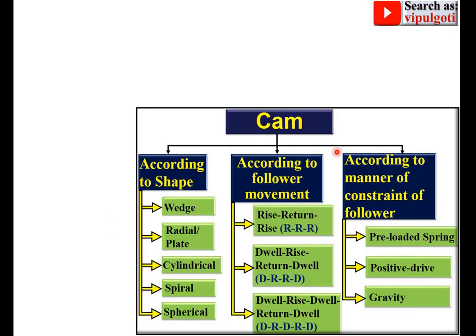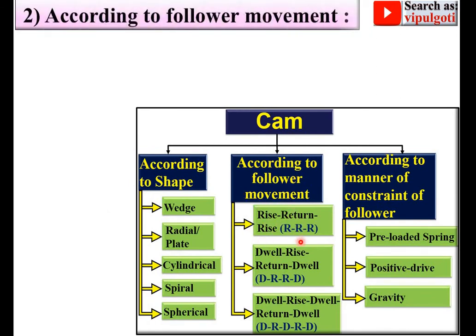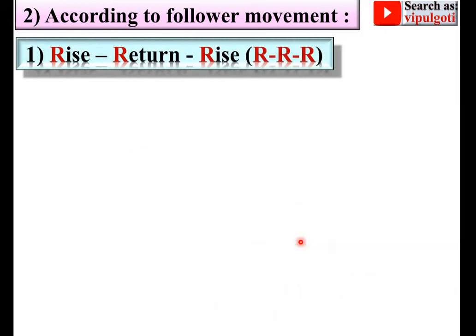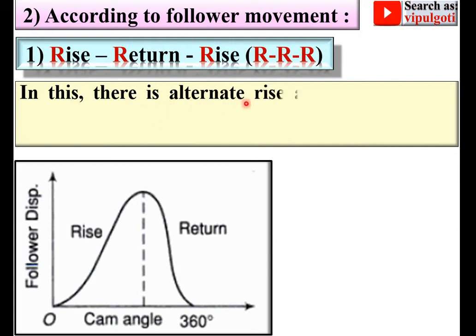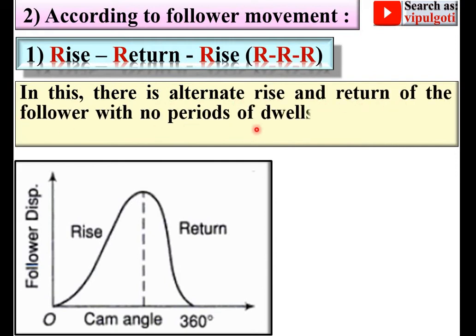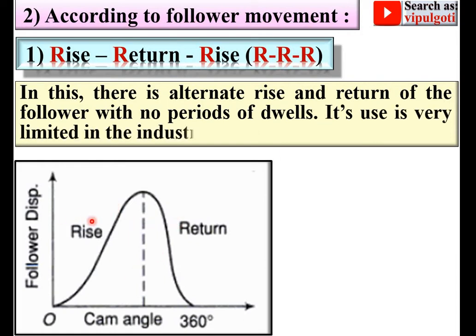Next, according to follower movement: the first type is Rise-Return-Rise, or RRR type. Here you can see the follower having rise, return, and once again rise. In this type, there is alternate rise and return of the follower with no period of dwell. Its use is very limited in the industry.